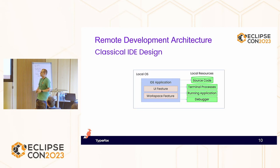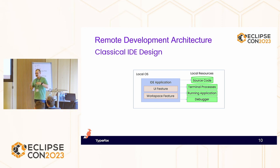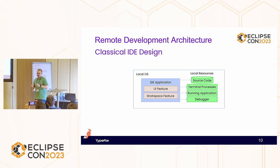So first off, how do classical IDEs actually work from an architectural overview? We're running on a local OS — Windows, Mac, Ubuntu. All of our resources that we actually want to access, stuff like source code, our running application, terminal processes, and our debugger, are all local. So it's quite easy to access using traditional means. Our application is kind of monolithic — even though you might have something like an Eclipse IDE with OSGI plugins, it still runs as one system, one process, and everything's embedded in that.